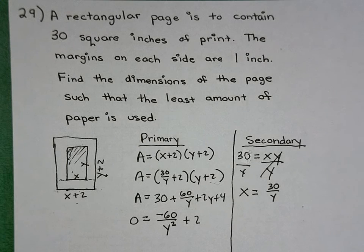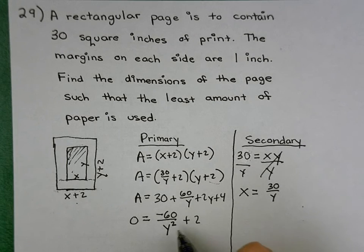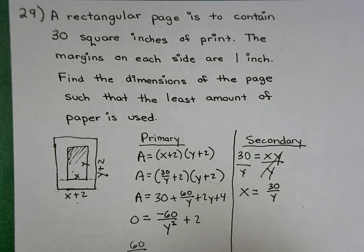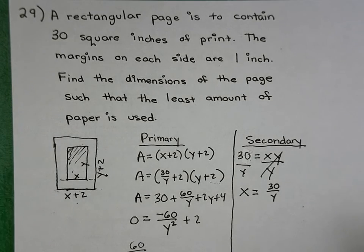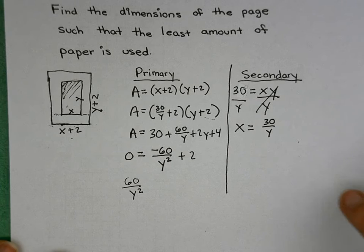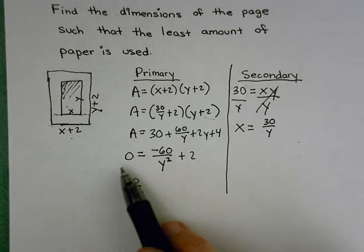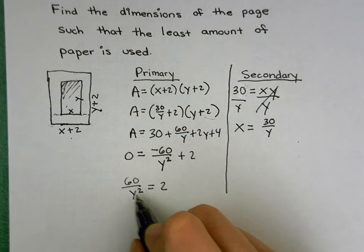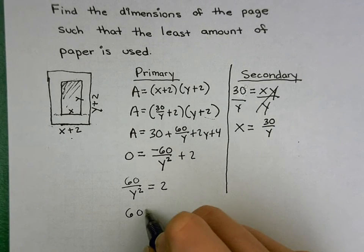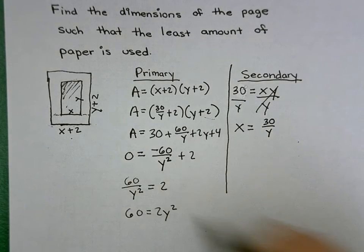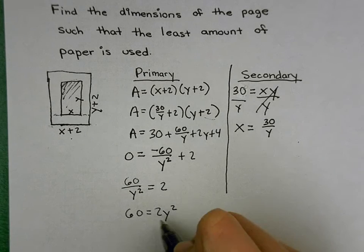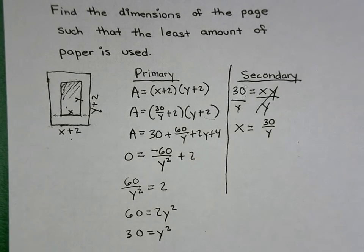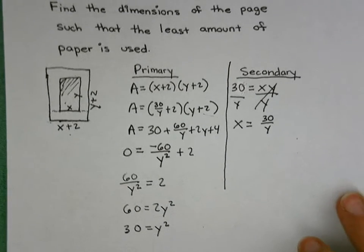Okay, so now we can solve for Y. I'm going to go ahead and add this 60 over Y squared to the other side. I added the 60 over Y squared to the other side. I'm now going to multiply both sides by Y squared, divide 2 over, and take the square root.